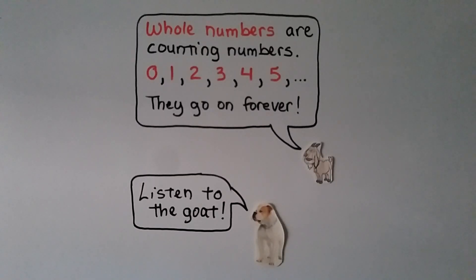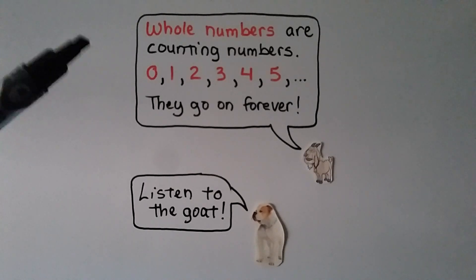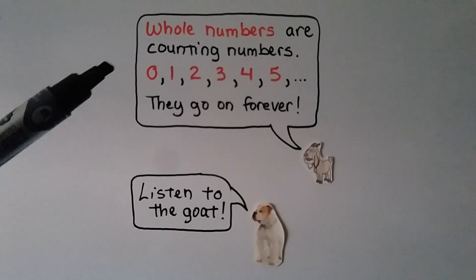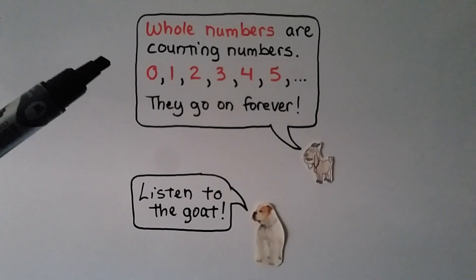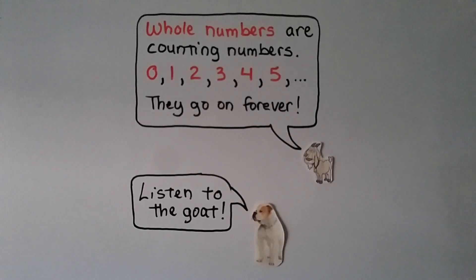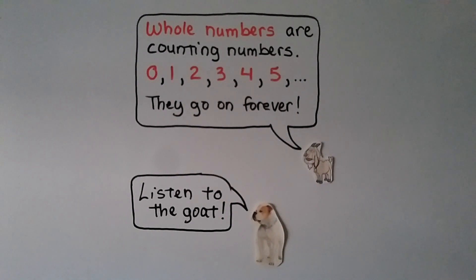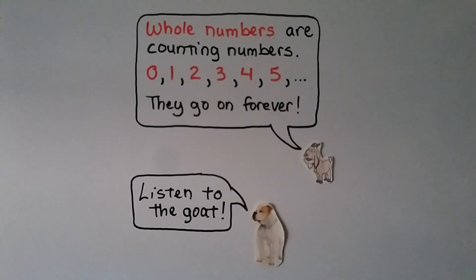Before we do our next word problem, remember that whole numbers are counting numbers — zero, one, two, three, four, five — and they go on forever.